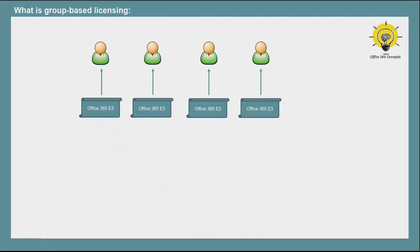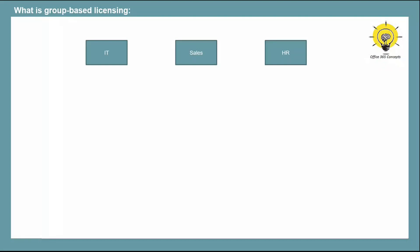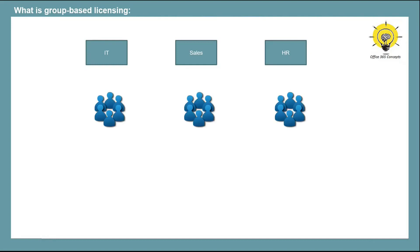Let's consider one more example. Let's assume we have three different departments in our organization — IT department, sales department, and HR department — and we have different numbers of users in each department. Each user from each department uses a different set of services, meaning the users from each department would require a different set of licenses. As an administrator, assigning these licenses one by one can be a hectic task because you have three different departments, multiple users in each department, and every department needs a different set of licenses. So this is where group-based licensing comes into the picture.